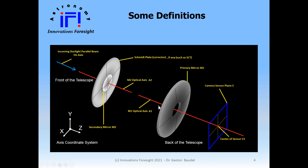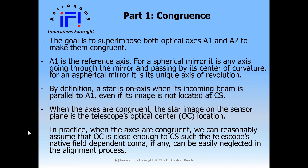You can see here the reference coordinate system: Z is the direction of light propagation, with Y and X axes. That convention will be used throughout this presentation. Now let's talk about Part 1: congruence — how we align the telescope to have both axes superimposed. The first axis of M1, named A1, is our reference axis, and by definition a star is on-axis when the optical axis of the incoming beam is congruent with A1.